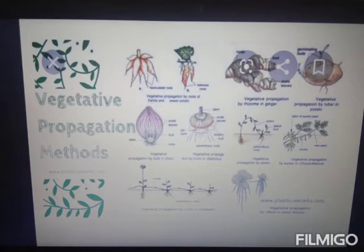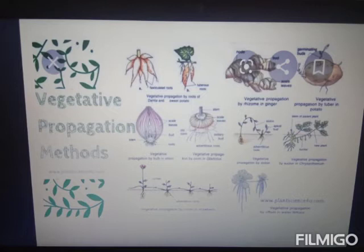In amoeba, spores can also form. During unfavorable conditions, amoeba undergoes encystation — withdrawing their pseudopodia and forming a thick covering called a cyst. During favorable conditions, the encysted amoeba divides by multiple fission and produces many minute amoeba called pseudopodiospores. The cyst wall then bursts, and spores are liberated; each spore becomes a new amoeba.